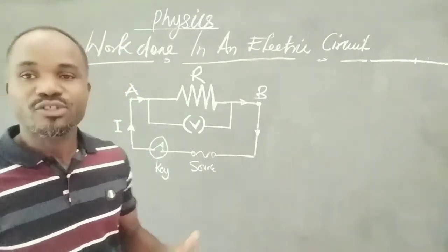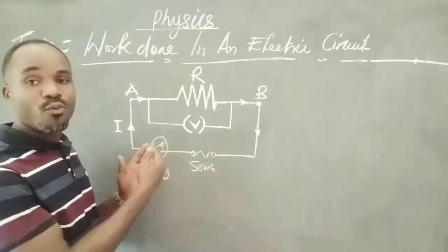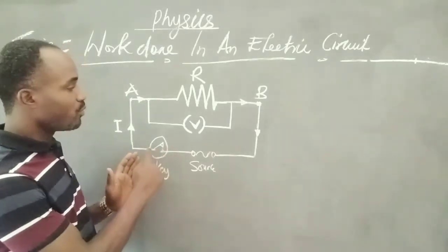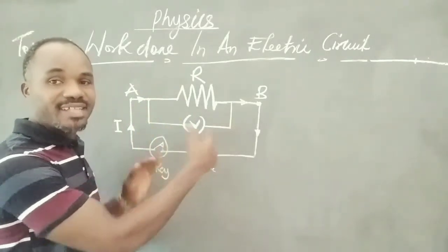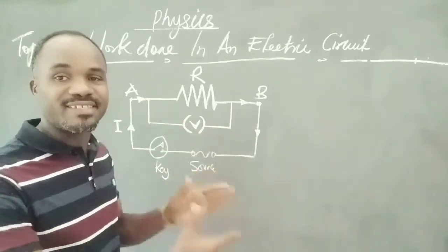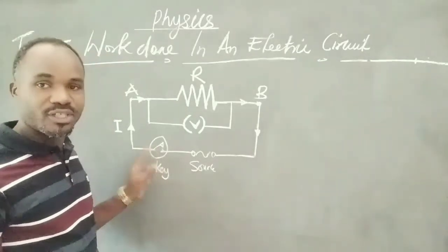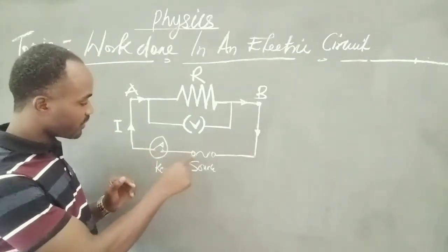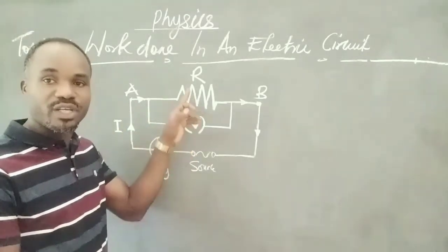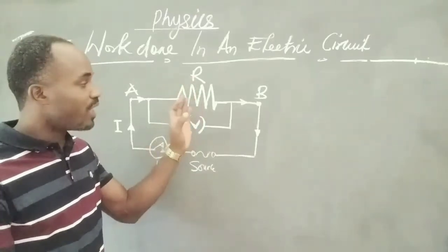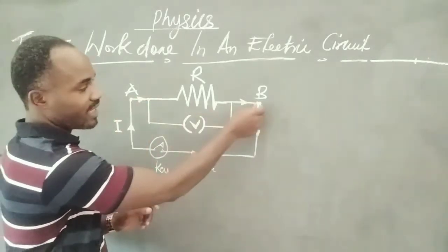When some quantity of electric current flows, as you can see, when some quantity of electric current flows from one point to another at different potential, work is set to be done. So how do I mean? If this key is closed, current flows from the source, moves into the load represented with the letter L, that's the resistor, and then fires back to the source once again. But there is a distance between this end and this end.